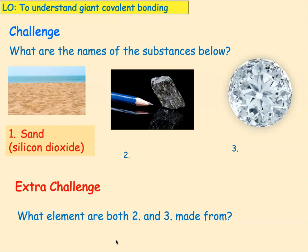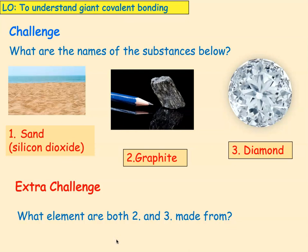Picture one is called sand, and the chemical name for sand is silicon dioxide. Picture two is called graphite — so we have graphite in our pencils. And picture three is diamond. I wonder if you can tell me what element makes up number two and number three. Yes — carbon. So both of them are made of carbon.